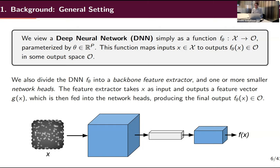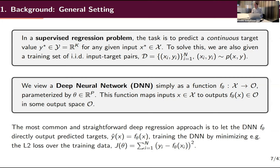The most common, most straightforward way of doing regression with deep learning is to let the network directly output the predicted target y-hat and then train the network by minimizing the L2 loss over the training data. That's the most common direct regression approach to regression using deep learning.